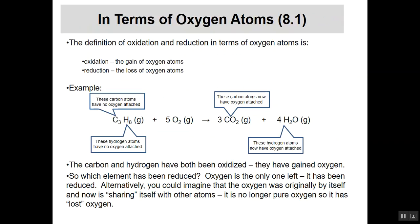Reduction, on the other hand, is where they've lost oxygen atoms. If you're going to be oxidized by picking up oxygen atoms, then you're reduced if you're losing oxygen atoms in that process. In the example equation, that's propane — C3H8 — reacting with oxygen. This is the burning process on your propane grill. It produces carbon dioxide and water molecules.